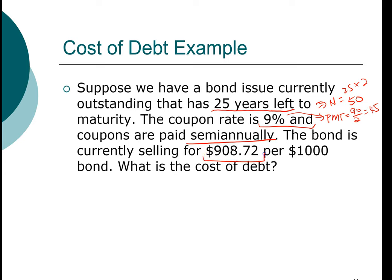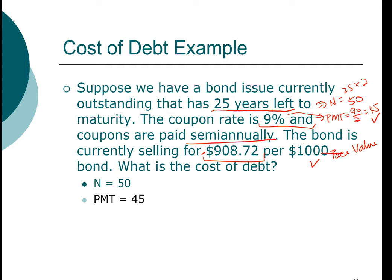The price of the bond today is $908.72, and the par value or face value of the bond is $1,000. We put all this information together and use a financial calculator to solve for the yield to maturity. We want to distinguish cash flows between inflows and outflows. We take the price of the bond as an outflow — we pay $908.72 to buy this bond — and in return we receive an inflow of $45 in coupon payments and an inflow of $1,000 in face value when the bond matures. So the number of periods is 50, the payment is $45 every 6 months, the face value is $1,000, and the present value today is an outflow of $908.72.